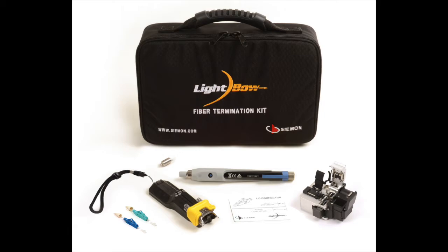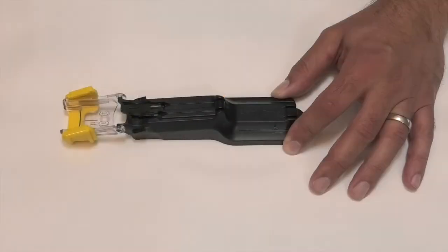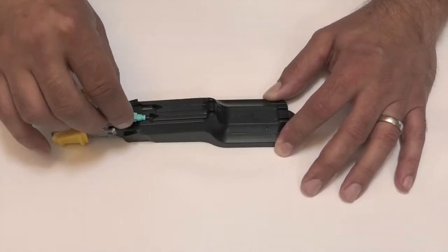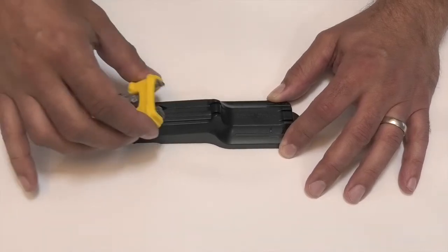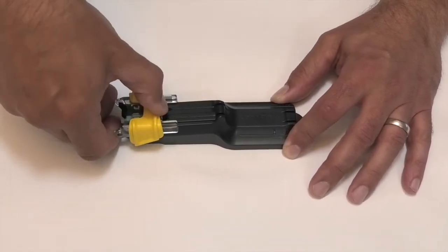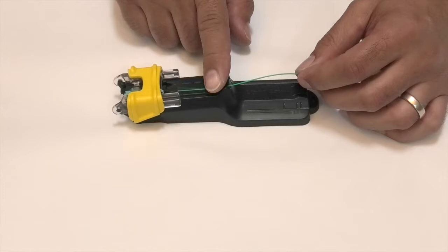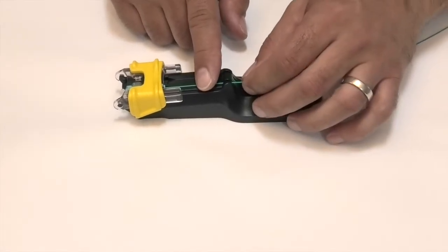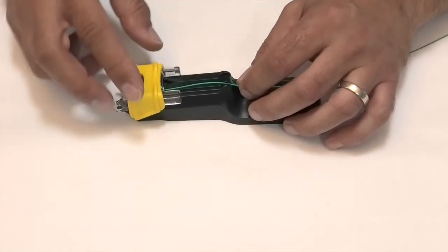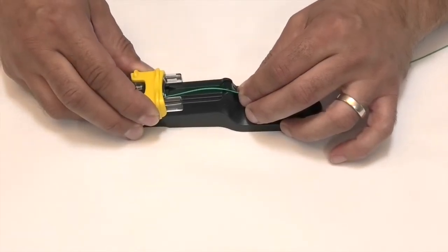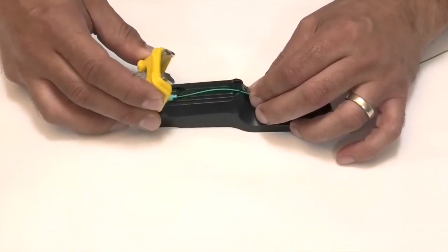With no batteries required, the ergonomic Lightbow Termination Tool combines both splice activation and mechanical crimping with universal LC and SC compatibility. The tool features alignment channels to simplify fiber insertion and the connector dust cap stays in place to protect the end face from contamination.